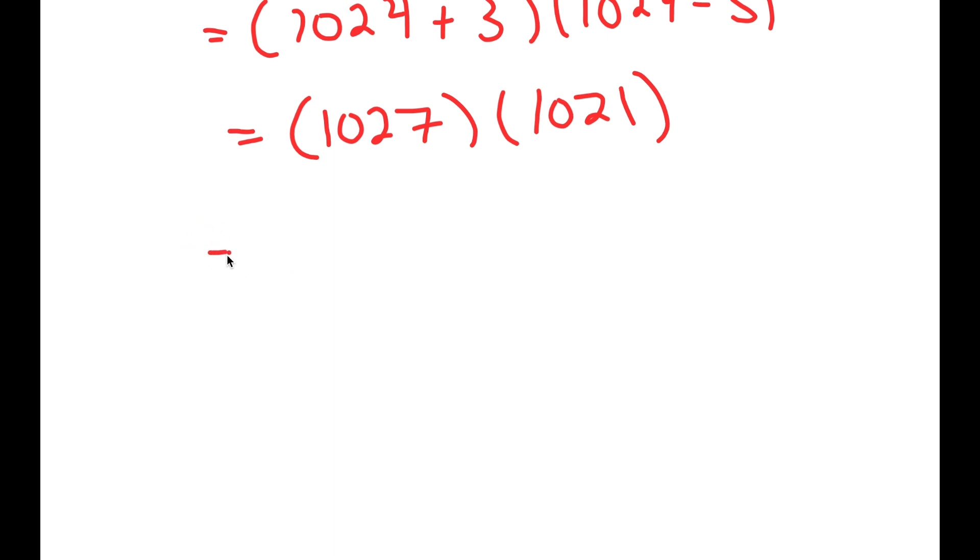So the easier method to doing this is rewriting 1,027 as 1,000 plus 27 and rewriting 1,021 as 1,000 plus 21.